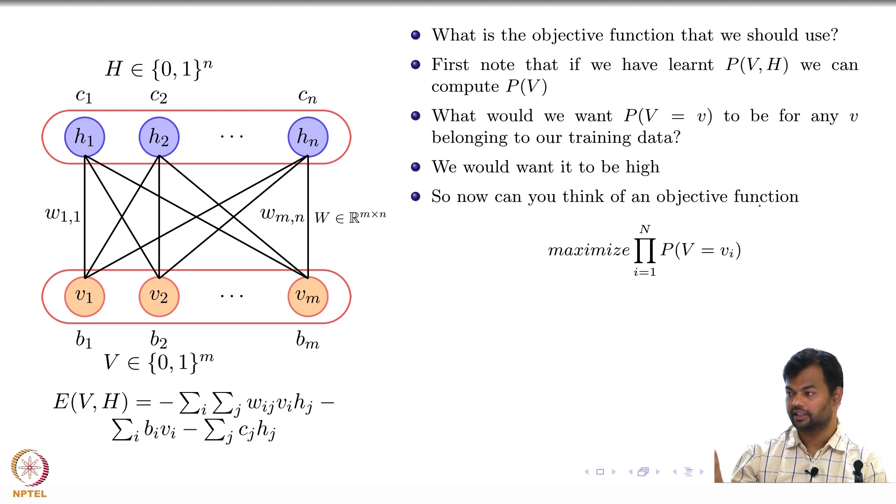So of all the possible configurations that the random variable V, which is a vector, can take, I want the probability mass to be concentrated on those configurations which I have seen in my training data. Does that statement make sense? And does this look like a legit objective function?